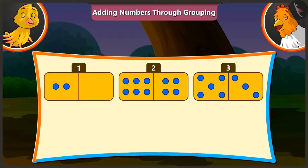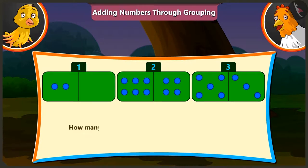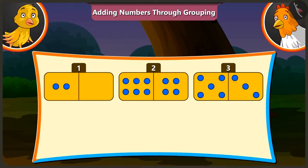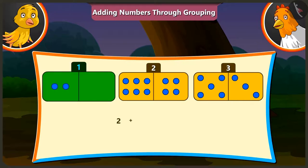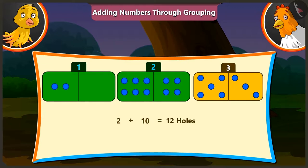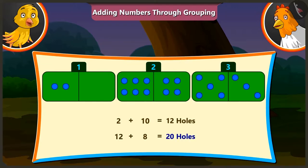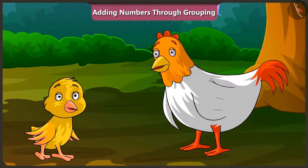Can you tell me how many holes are there on all three domino cards? To find that, we have to add the number of holes on all three cards. So, there are a total of 2 and 10, which is 12 holes, and 12 and 8, which is 20 holes. Well done, Pilu.